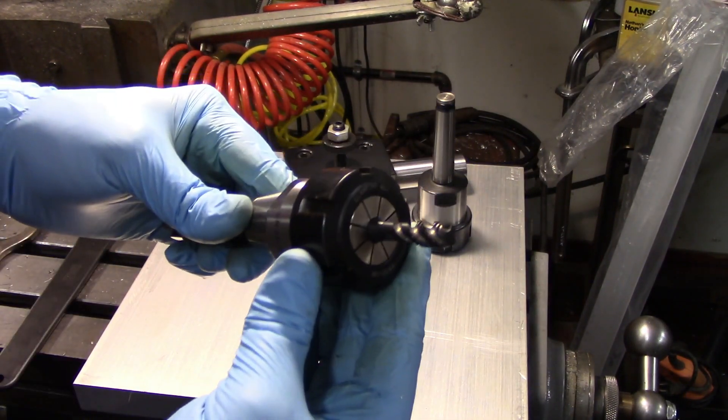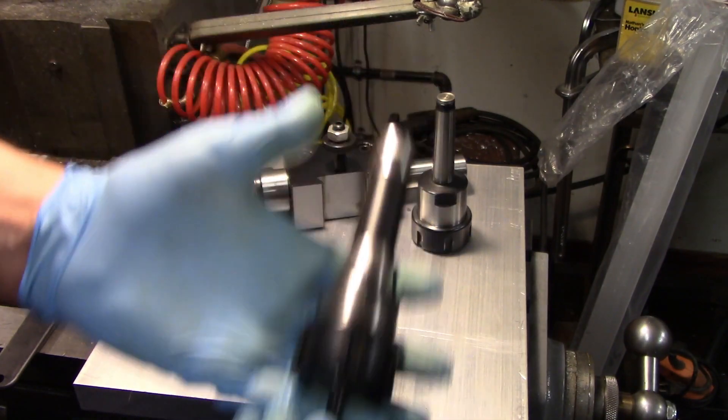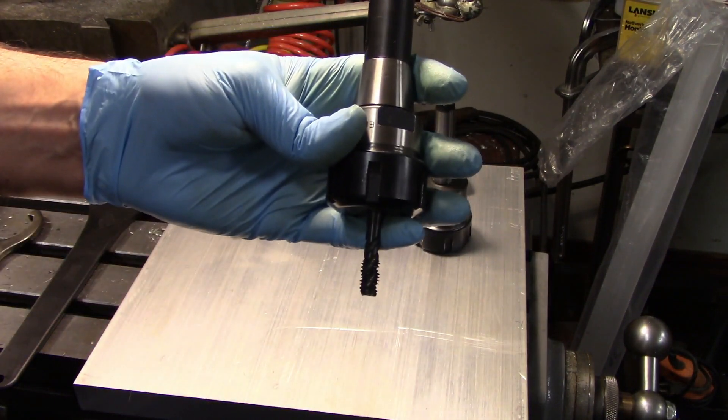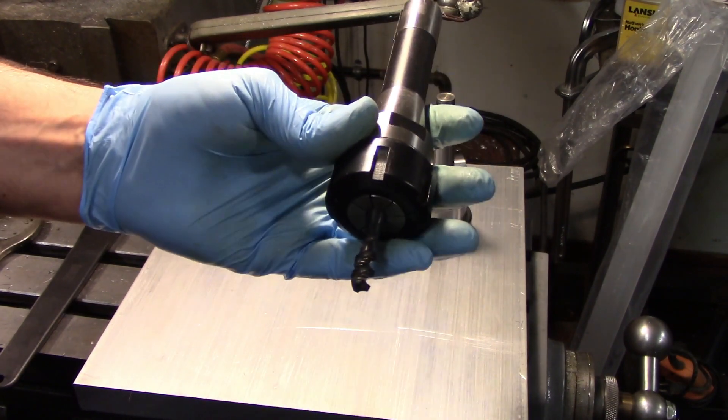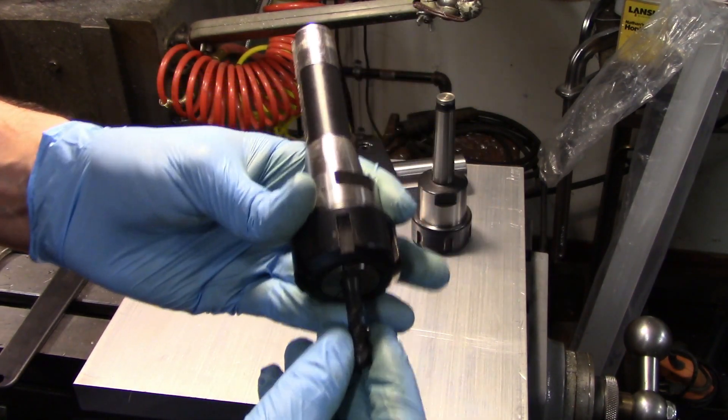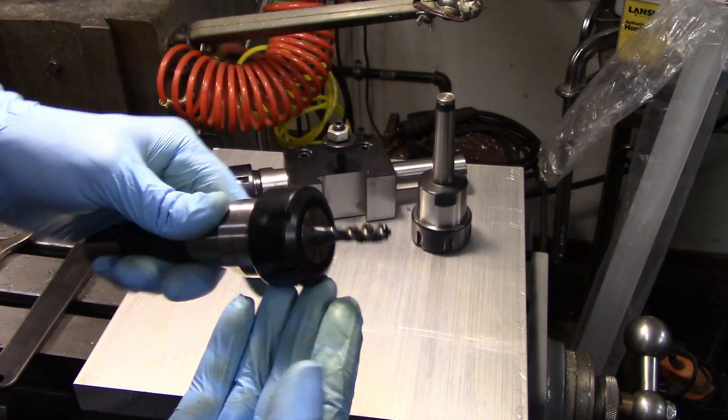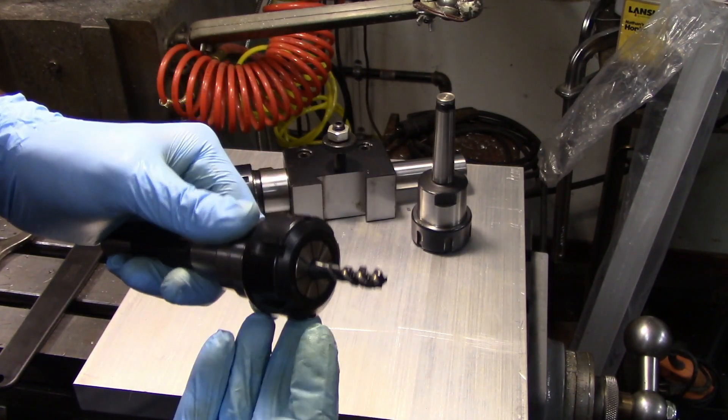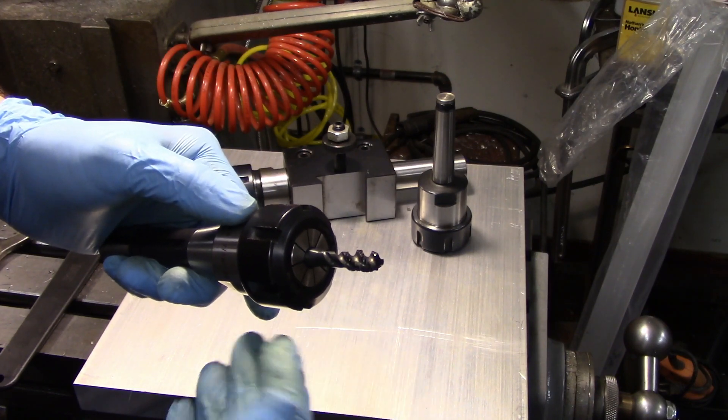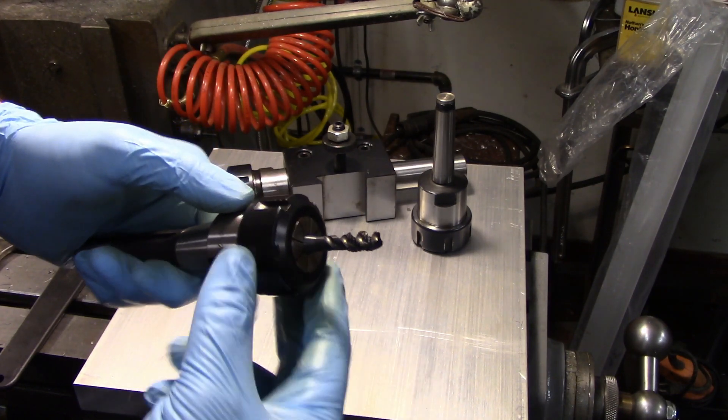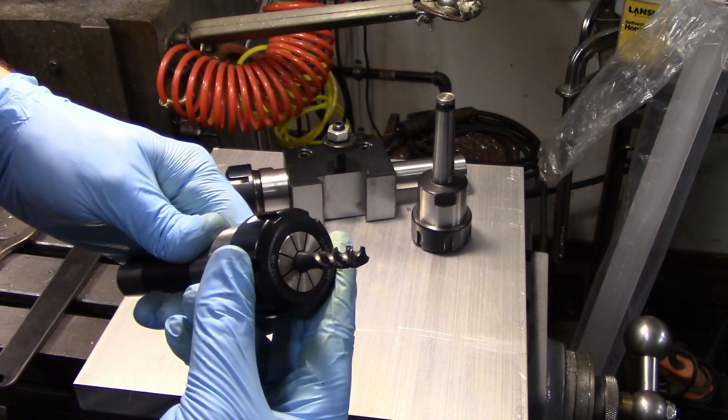Another really fantastic advantage to these is you can take this out of the spindle and then switch over to a drill chuck or a different ER collet chuck with a different tool, and when you put this back in you still know where the end of your tool is. You get that advantage with end mill holders as well, but they're a fixed size so you can't hold the wide range of tools that you could in an ER collet chuck.